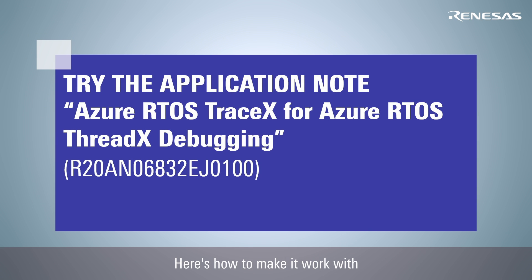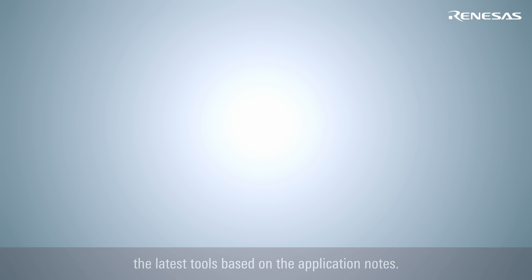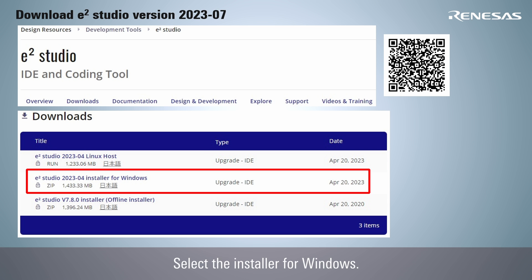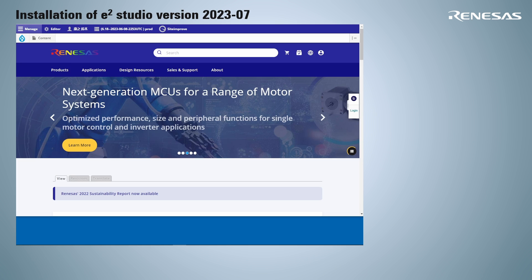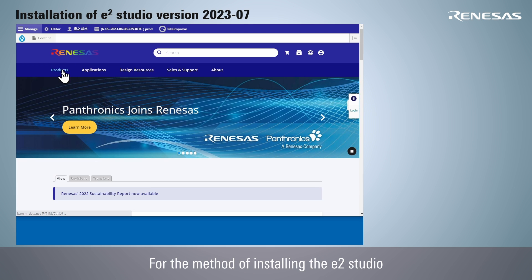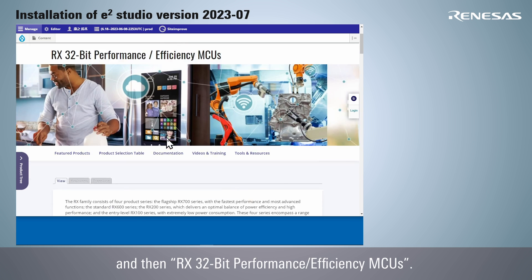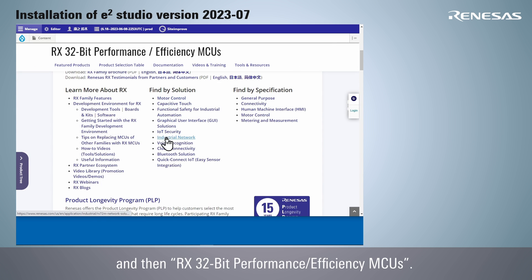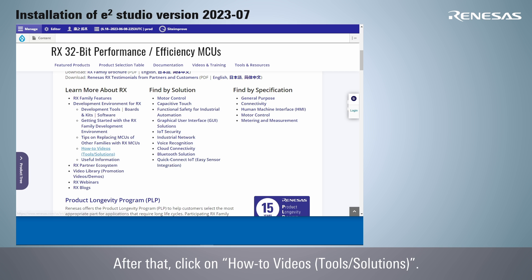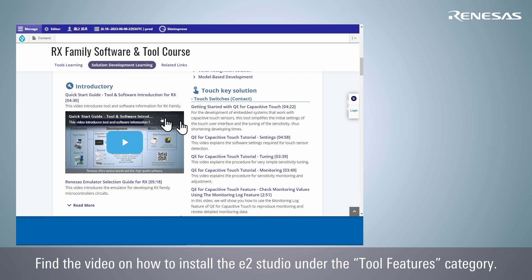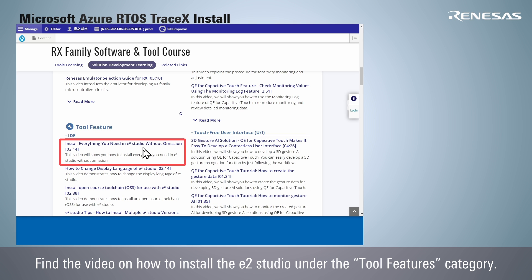Here's how to make it work with the latest tools based on the application notes. Download E2 Studio 2023-04 from the website and select the installer for Windows. For the method of installing E2 Studio, select Products on the Renesas website, then RX 32-bit Performance/Efficiency MCUs, then How-To Videos and Tools/Solutions. Find the video on how to install E2 Studio under the Tool Features category.